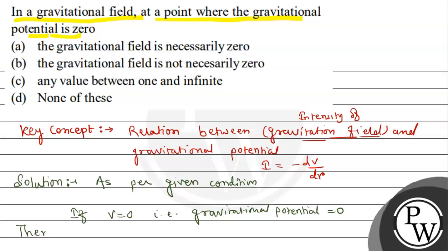Then we have to tell you what will happen. So i equals to what will happen? That is also equals to 0. So gravitational field is necessarily 0. Option A is the right option.